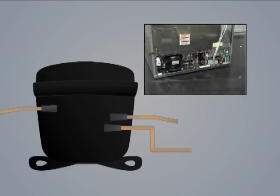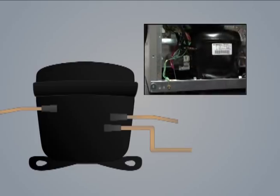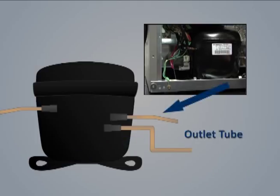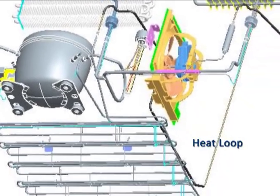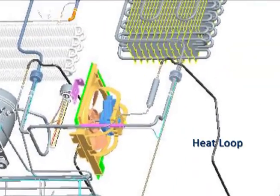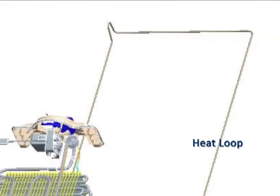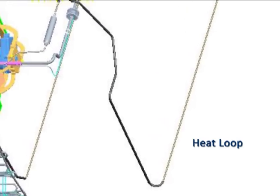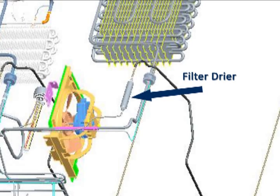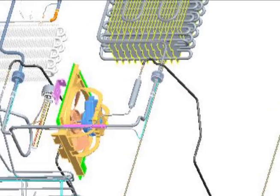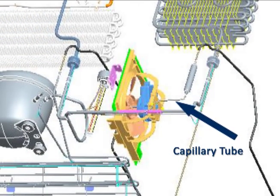Connecting the components: the compressor is the heart of the refrigeration system. It consists of a reciprocal piston pump driven by a permanent split capacitor motor encased in a metal case. The discharge tube connects the compressor to the inlet of the condenser. The outlet of the condenser is connected to the inlet of the heat loop, also called the Yoder line. The heat loop tube is routed around the perimeter of the refrigerator cabinet door matting flange. The outlet of the heat loop is connected to the inlet of the filter dryer, which filters out debris and removes any moisture. The outlet of the dryer is a capillary tube, also called cap tube.